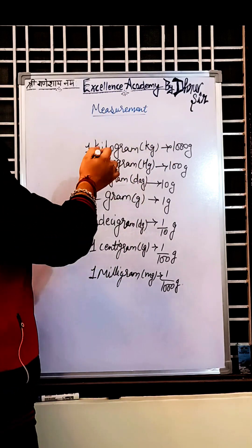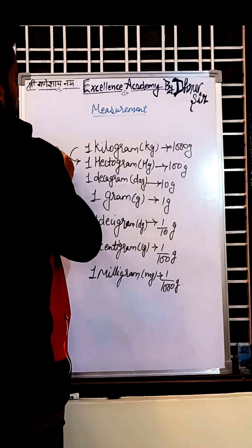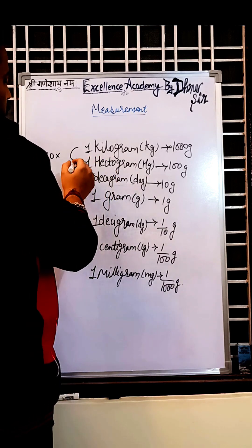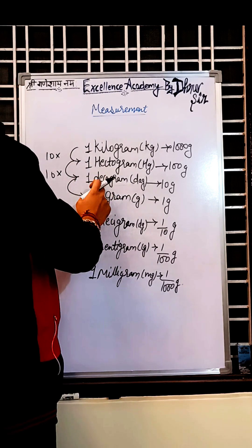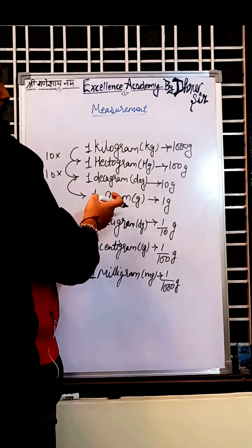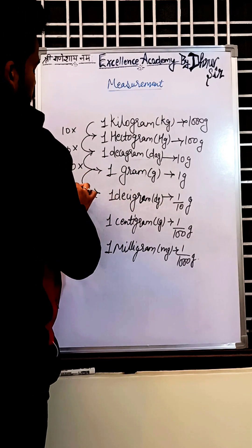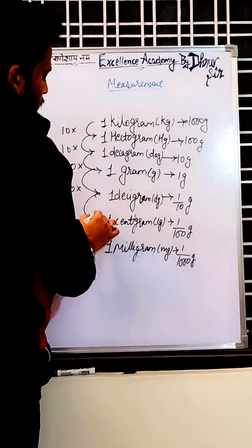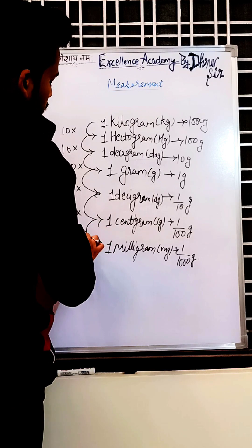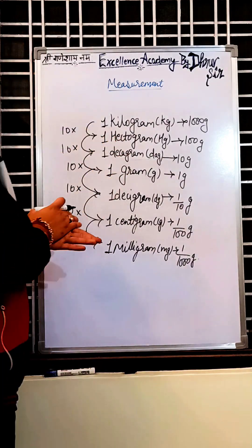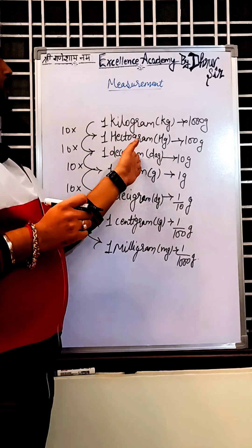When moving from a bigger unit to a smaller unit, we have to multiply. So to change 1 kg into hectogram, multiply by 10. From hectogram into decagram, multiply by 10. From gram into decigram, multiply by 10. From decigram into centigram, multiply by 10. From centigram into milligram, multiply by 10.